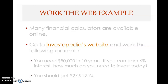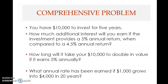We now finish this topic and move to the comprehensive problem, which has a combination of all the problems we have seen previously. The first point: you have $10,000 to invest for five years. This tells you the present value is $10,000 and the term is five years — both are known.